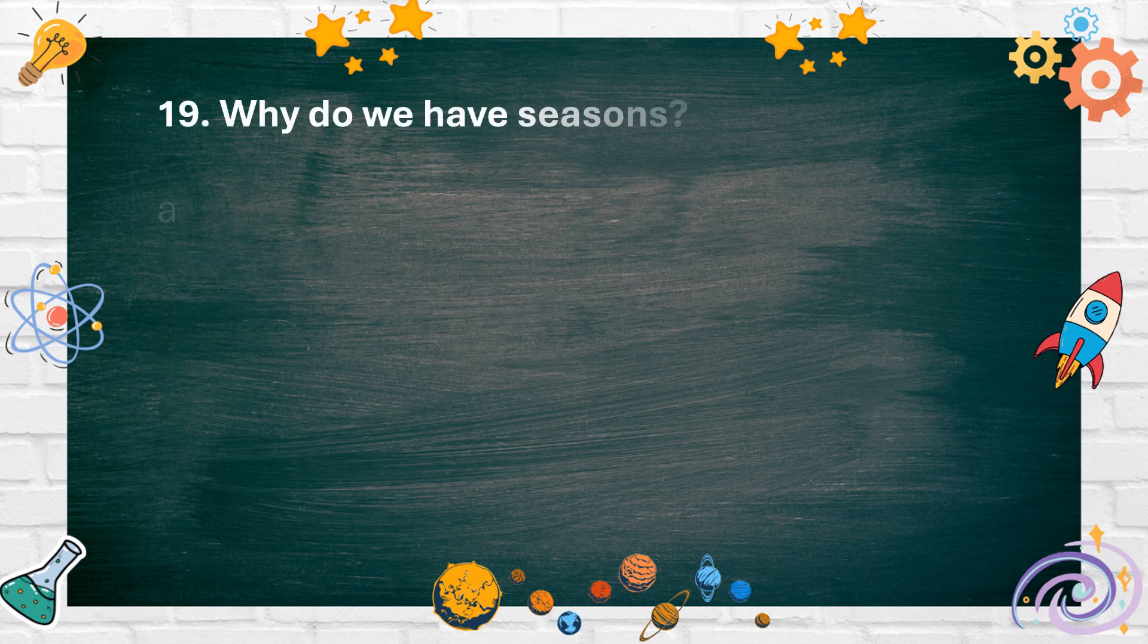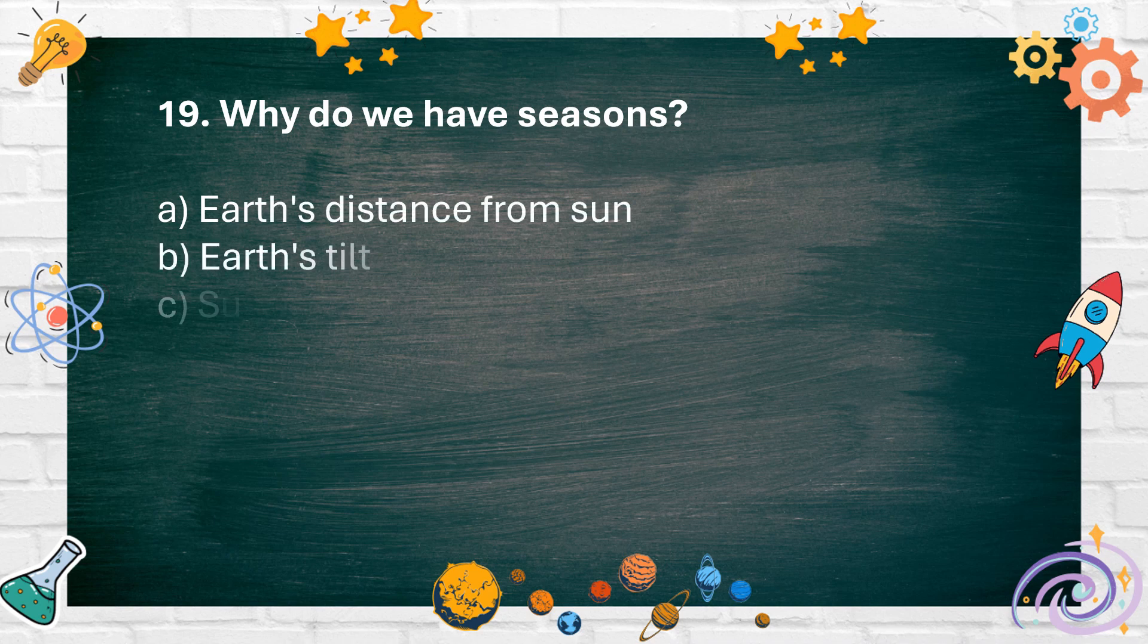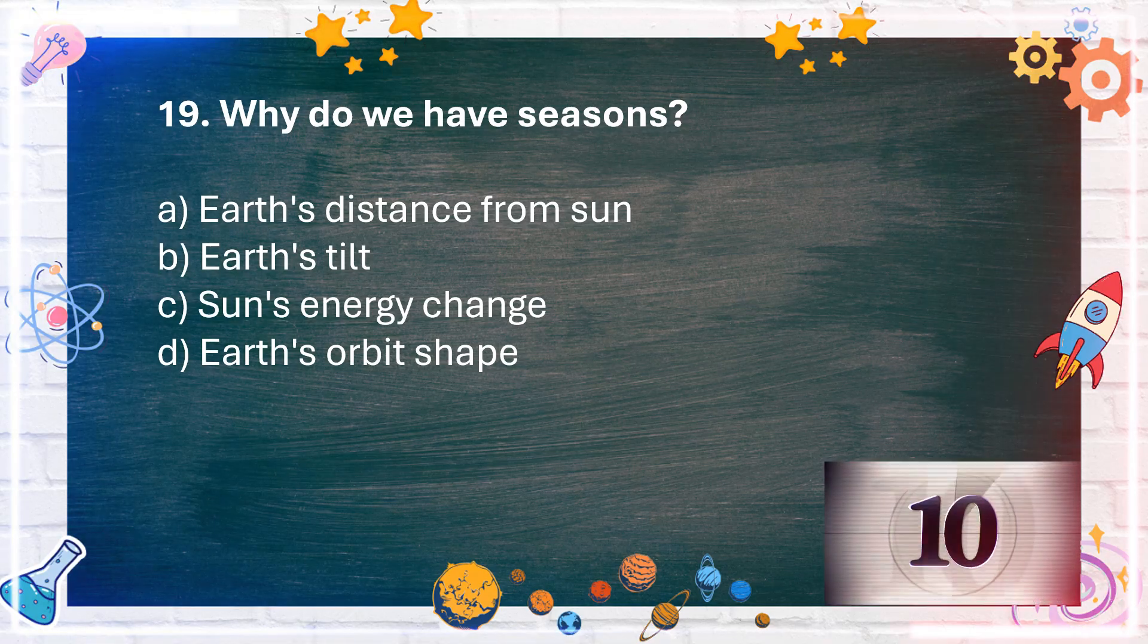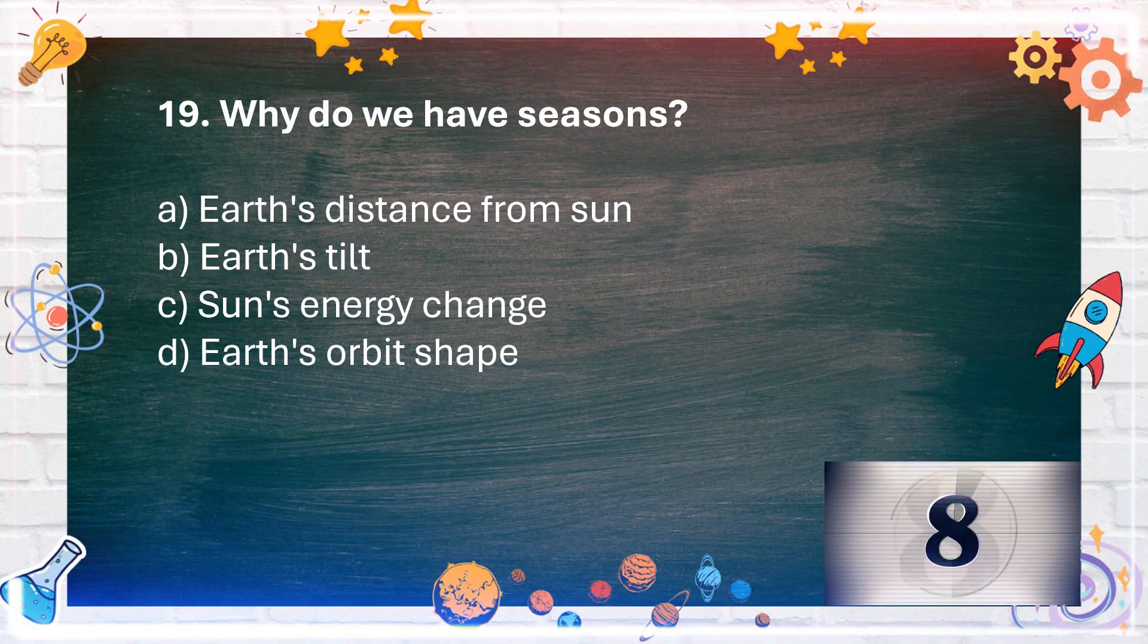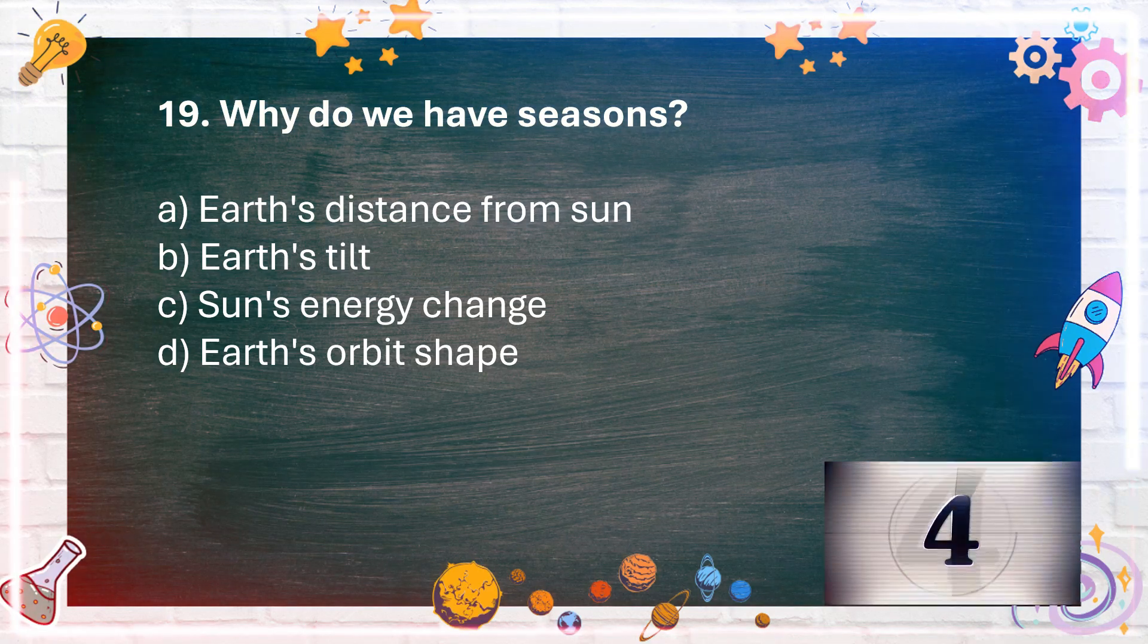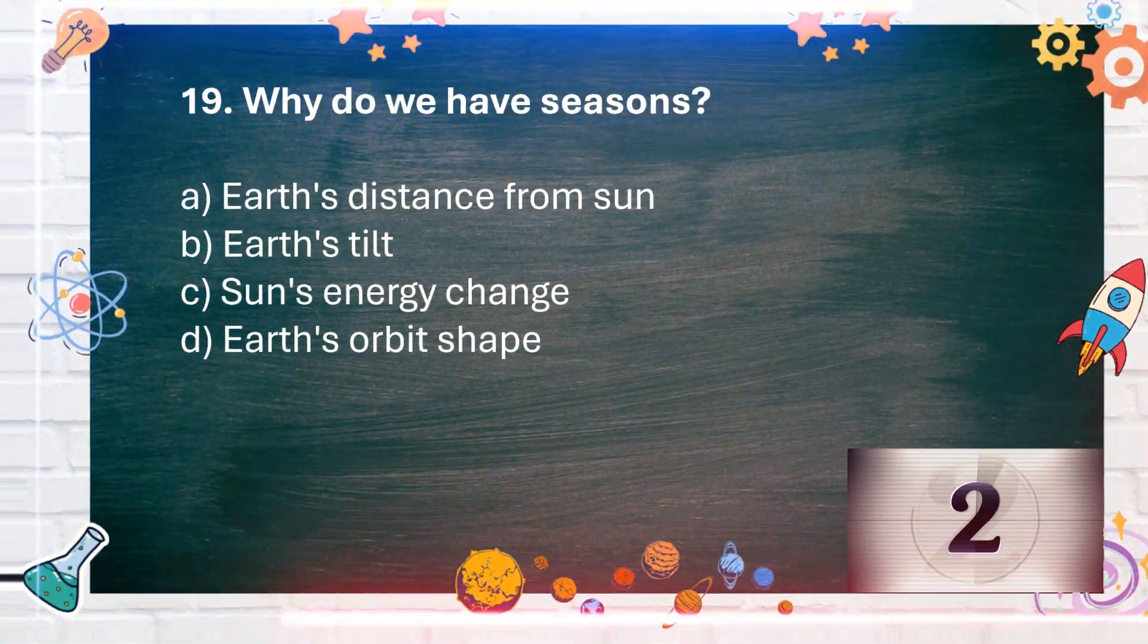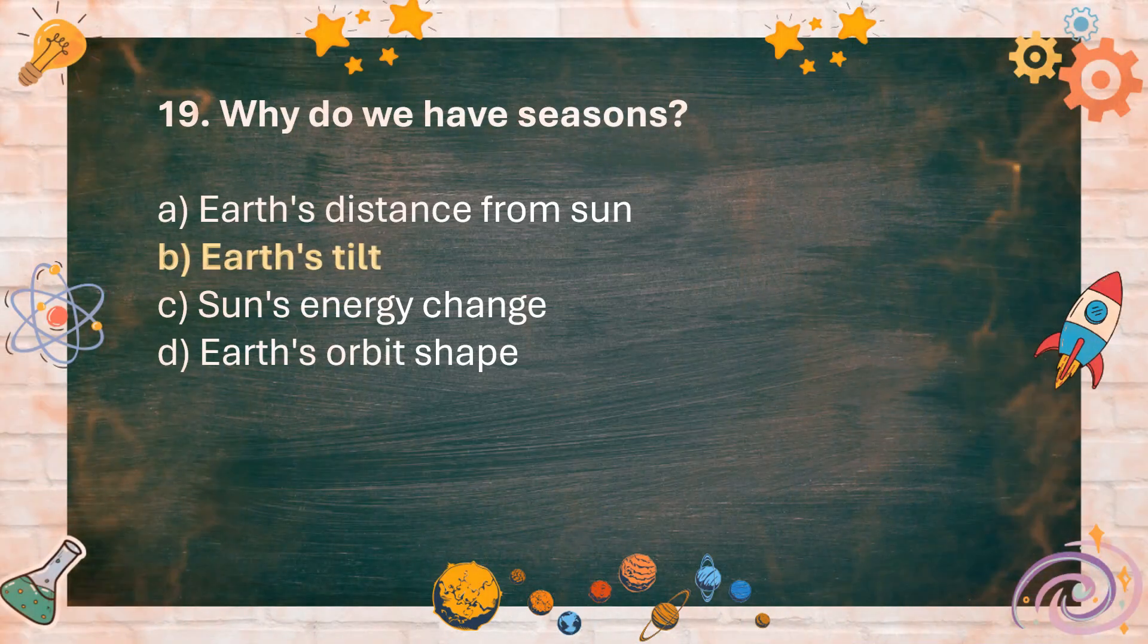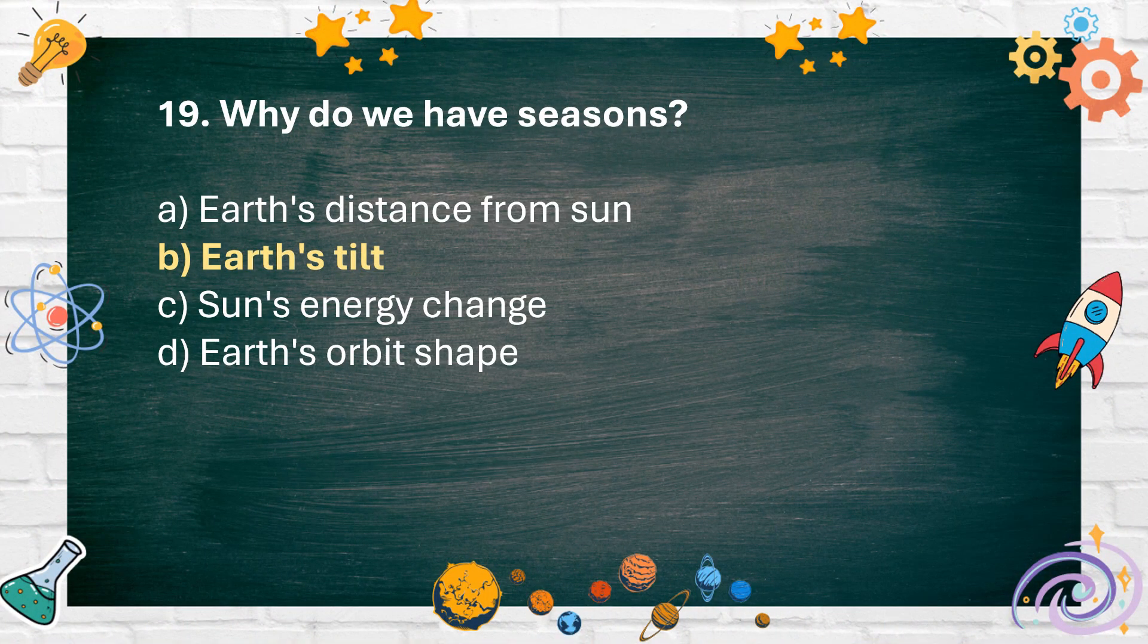Number 19. Why do we have seasons? A. Earth's distance from sun B. Earth's tilt C. Sun's energy change D. Earth's orbit shape. The answer is B. Earth's tilt.